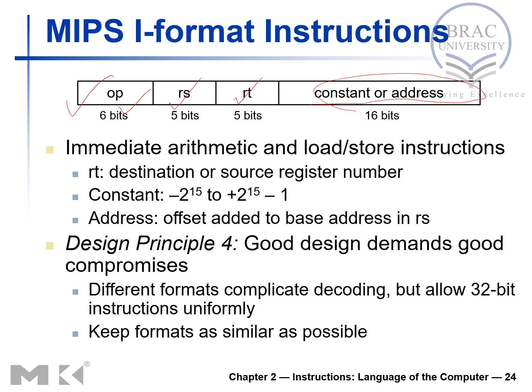If I write an I-type instruction, let's say it's add I with values 10, 11, and 13. This is the constant value, and this value will be represented in binary form in this field. The range of this value is between minus 2 to the power 15 to plus 2 to the power 15 minus 1.